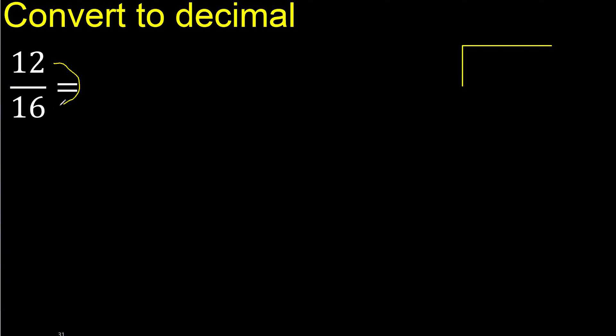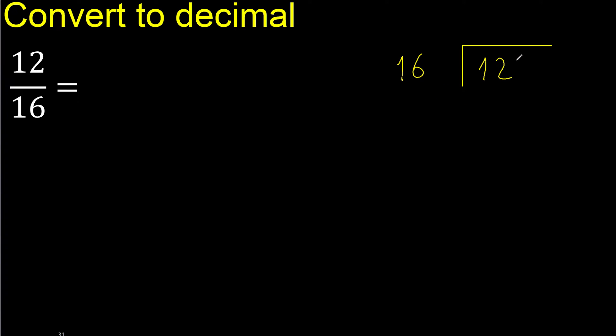12 divided by 16. 12 is less, therefore complete — always complete with 0.